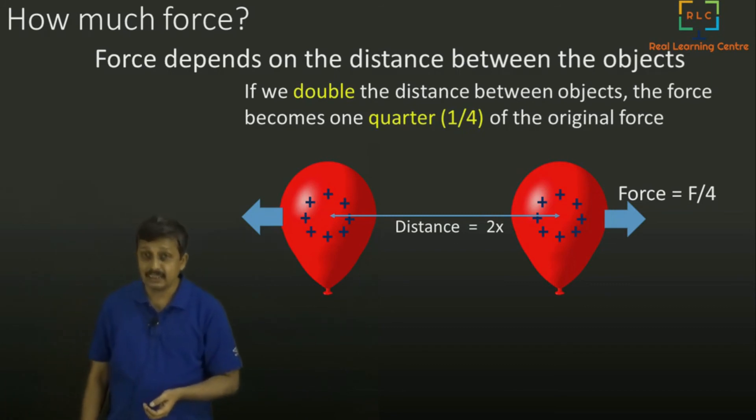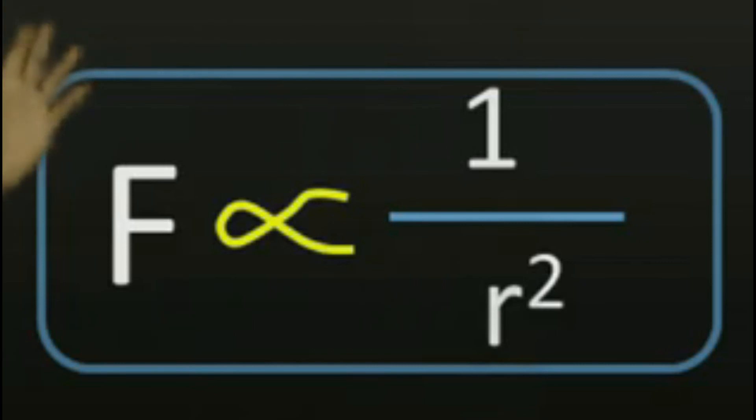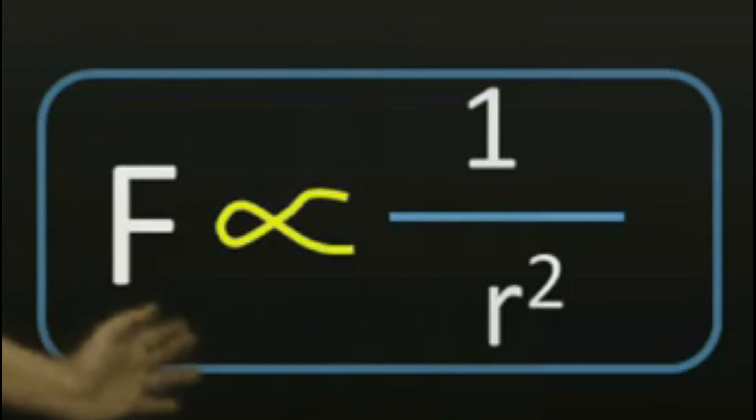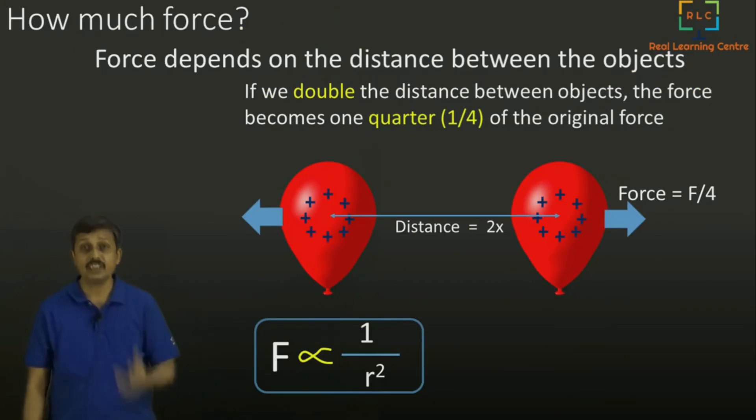So if we double the distance between the objects, the force becomes one fourth. If we triple, force becomes one ninth. If we make it four times, force becomes one sixteenth. So we will say the force is inversely proportional to the square of the distance between them. The distance between them, we call it using r. So if the distance between them is r, then force is proportional to 1 by r square.